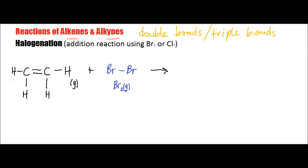So let's look at one other type of reaction, which is called halogenation, which is really an addition type of reaction. If we're using bromine or chlorine — remember what we said about fluorine being very, very reactive — what's going to happen is we're referring to this as an addition reaction.